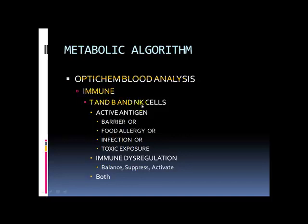The first panel we get is the T cell, B cell, and natural killer cell panel. As a brief overview of how the immune system works: we have T regulatory cells, which are the regulators of the entire immune system. We have T helper cells, which are like the accelerator pedal. When something comes in that we don't like — a bacteria — the T regulatory cells send a message, and all these messages are sent via hormones or hormone-like substances.